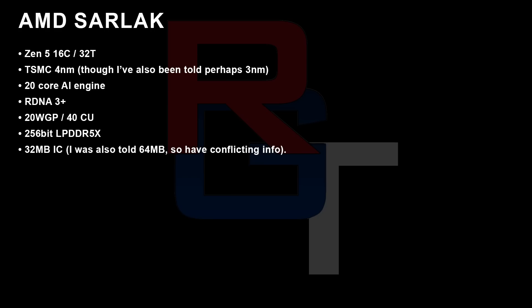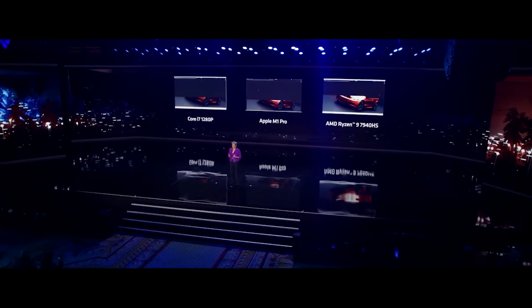What I am fairly certain about now: it's Zen 5, 16 cores, 32 threads, TSMC 4nm — although some folks are telling me it's 3nm — with 20 core AI engines and RDNA 3+. RDNA 3+ has a couple of small changes revolving around incorporating some RDNA 4 features, essentially floating point support backported to RDNA 3+. There are going to be 20 workgroup processors, up to 40 compute units, 256-bit LPDDR5X memory, and 32 megabytes of Infinity Cache — though I've also been told conflicting information suggesting it's 64 megabytes.